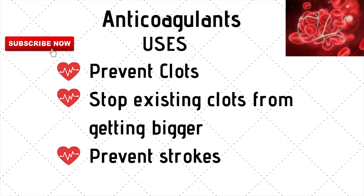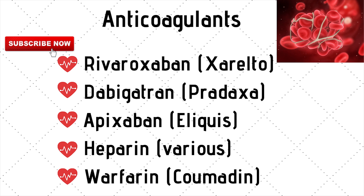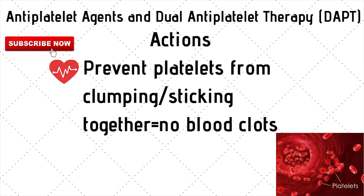Anticoagulants are used to prevent clots, to stop any existing clots from getting bigger, and also to prevent strokes from occurring. Common anticoagulant drugs include rivaroxaban (Xarelto), dabigatran (Pradaxa), apixaban (Eliquis), heparin, and warfarin, also known as Coumadin.